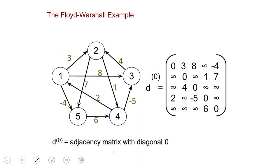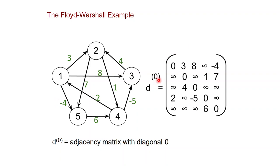Let us give an example of how the Floyd-Warshall algorithm works. Here is a graph with five nodes: one, two, three, four, five. We have weights on the edges — this edge has weight three, this edge here has weight minus four. The weights can be negative. We start with the D superscript 0 matrix, which is just the weight function.